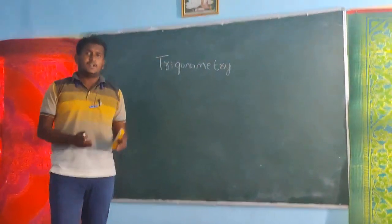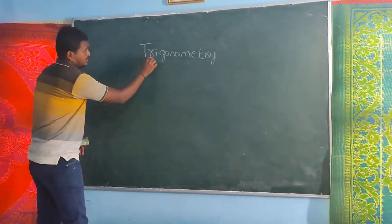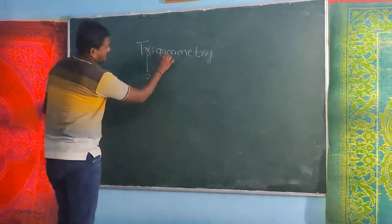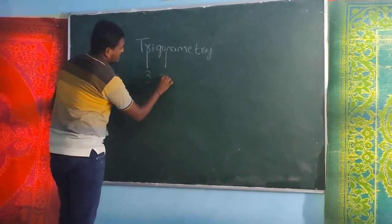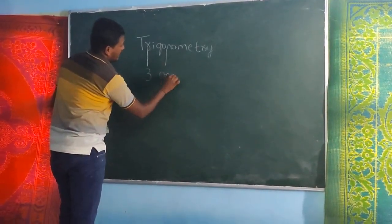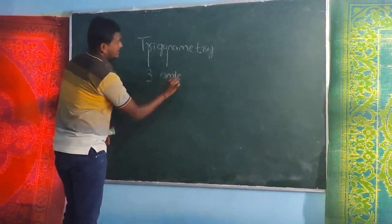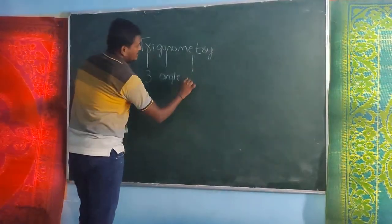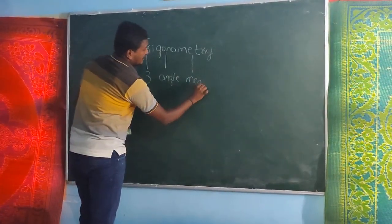Trigonometry: 'tri' means 3, 'gono' means angle, and 'metry' means measurement.